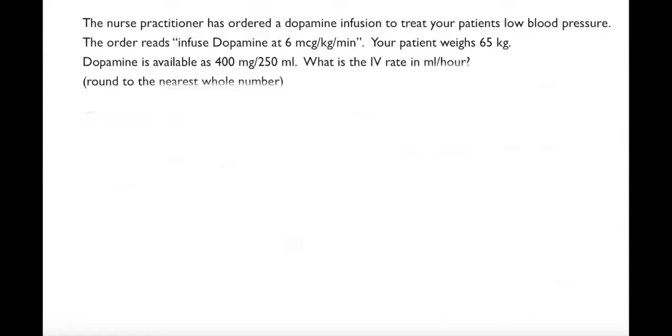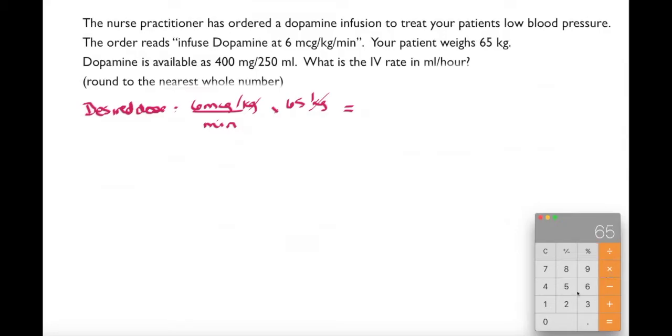All right, here we have a nurse practitioner that's ordered a dopamine infusion to treat a patient's low blood pressure. The order is for dopamine at 6 micrograms per kilogram per minute. I have a patient who weighs 65 kilograms and an available dose of 400 milligrams per 250 mls. What is the IV rate in mils per hour, and I want to round that to the nearest whole number. The first thing I want to know is what is my desired dose, because I need to finish this calculation.